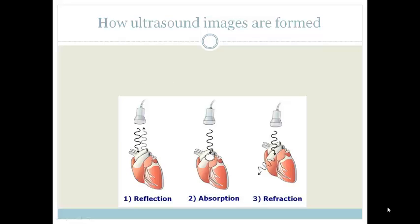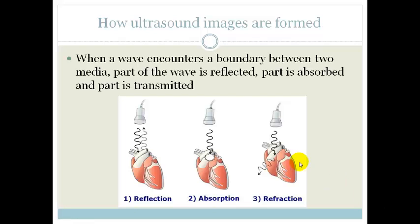We use ultrasound to make images. Let's talk about how these images are formed. When the wave encounters a boundary between two media — in other words, an edge between, for example, liquid and a solid, or between one type of flesh and another type of flesh — part of the wave is reflected, part of it is absorbed, and part of it is refracted or transmitted. And that is how it works. Basically, what we get is a part of pictures formed from that.